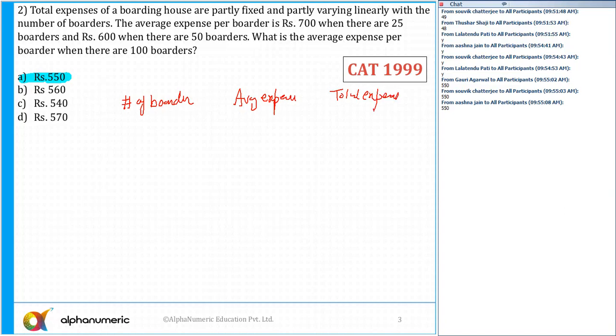The average expense per boarder is rupees 700. The average expense is rupees 700 when there are 25 boarders. So the total will be nothing but 25 into 700 which is equal to 17,500.